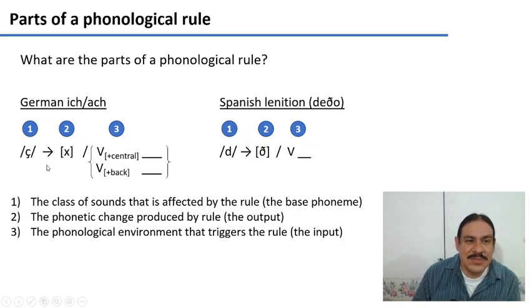Or here, whenever you see a vowel and a d, that d is transformed into a ð. So these are the parts of a phonological rule.